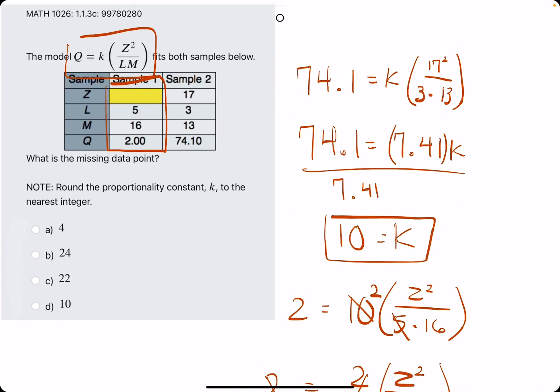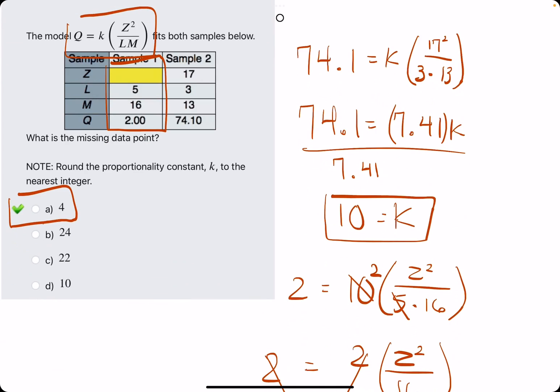We'll see what they have. Yep, so 4 looks like our best answer. So we break out the eraser, and we see that A is our answer.